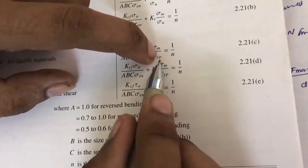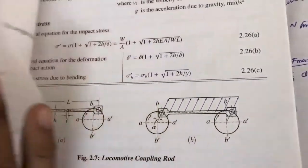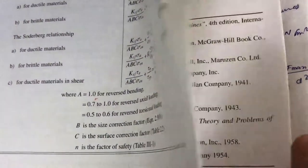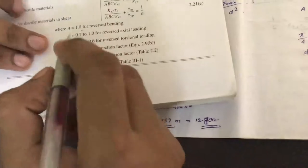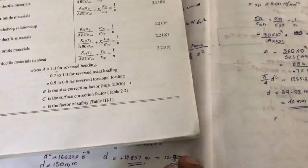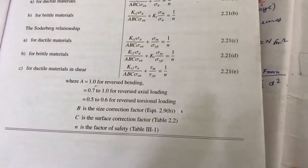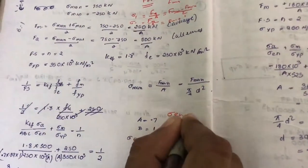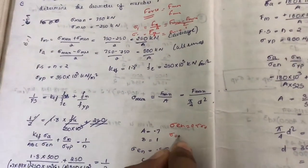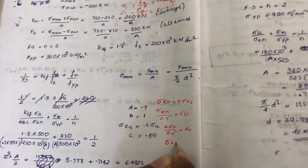Sigma En and sigma YP are given in the question. Correction factor A is taken as 1 for reversed loading. Factor B is always taken as 1. For factor C, the surface correction factor, we use the relation sigma En = 0.5 * sigma U, so sigma U = sigma En / 0.5 = 250 / 0.5 = 500 MPa.